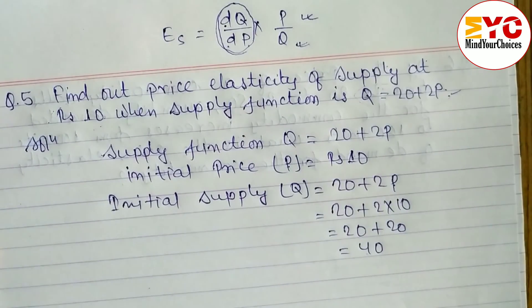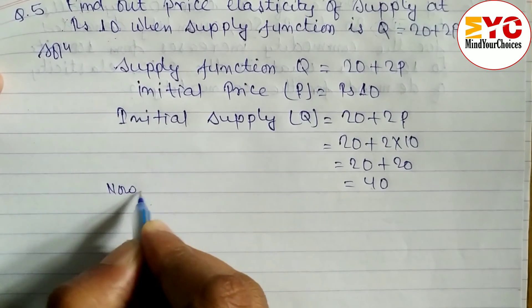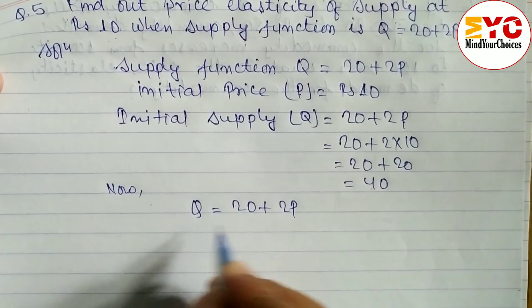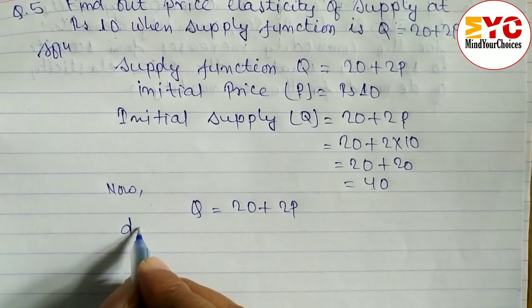Let's take this function and find out dQ/dP. Q = 20 + 2P is the supply function. Now differentiating both sides.